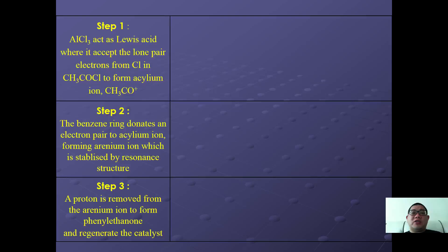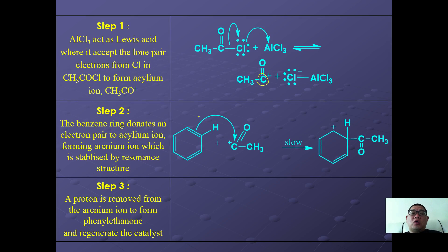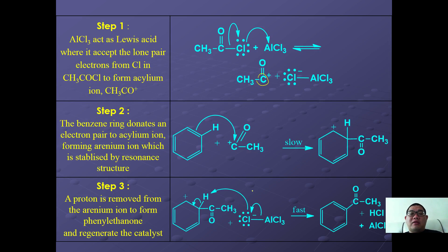The mechanism is very similar to that of alkylation: AlCl3 acts as a catalyst to promote heterolytic fission, forming a strong acylium electrophile. This electrophile attacks the benzene ring, forming an intermediate complex stabilized by resonance. Deprotonation then takes place — the Cl from the complex deprotonates the ring, reforming the pi system — to give the desired product, acetophenone.